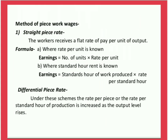Formula A — where rate per unit is known: Total Earning is equal to number of units multiplied by rate per unit. Second, calculate Piece Rate Wages where standard hour rate is given: Total Earning is equal to standard hours of work produced multiplied by rate per standard hour.